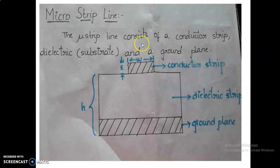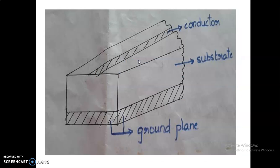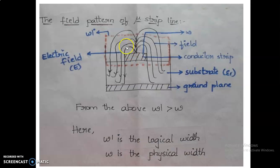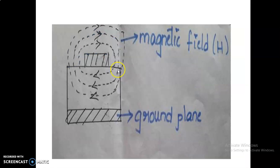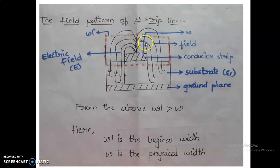This is the conductor where we give some input. Because of that conductor, there will be generation of electric field and magnetic field. The magnetic field will revolve around the conductor, and the electric field will propagate in a specific fashion.